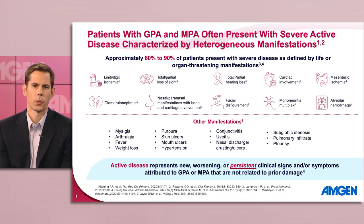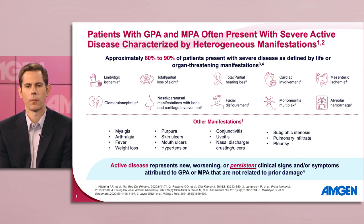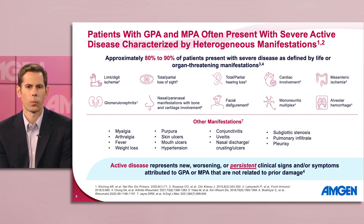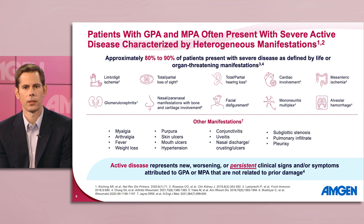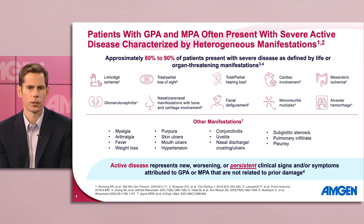Note that most patients will present with severe disease as defined by life or organ threatening manifestations. However, it is also important to recognize other manifestations that indicate disease activity. Monitor for signs and symptoms such as myalgia, arthralgia, fever, weight loss, skin lesions, and mouth ulcers. You may also see conjunctivitis and uveitis, nasal discharge, crusting or ulceration, and pleurisy.